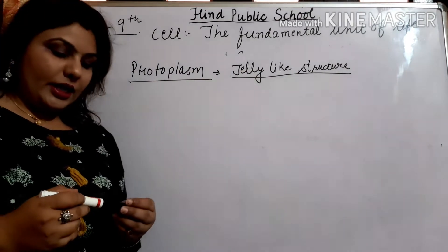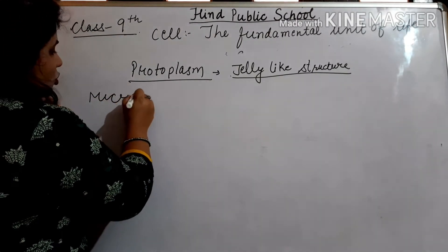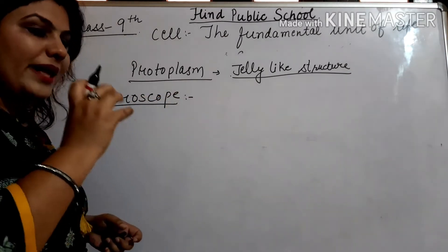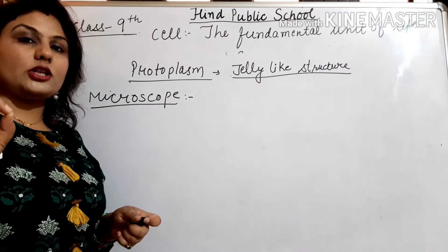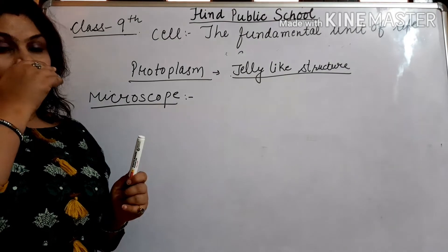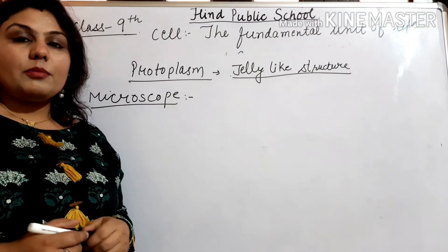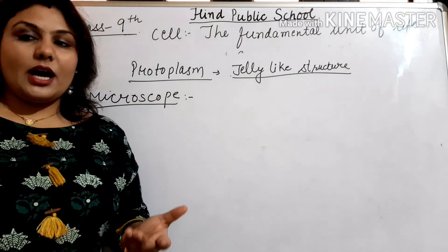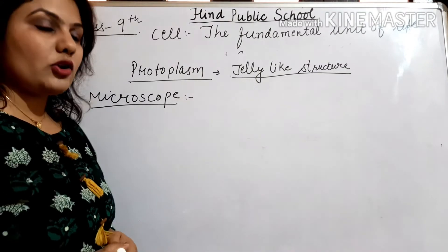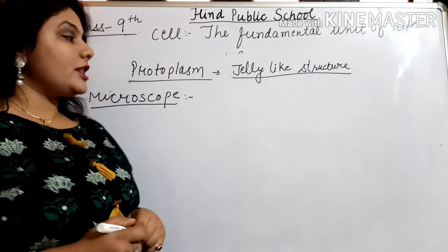In sab ko observe karne ke liye Leeuwenhoek ke paas tha microscope. Ab hum baat karte hain — microscope kya hota hai? Microscope ek tarah ka instrument hota hai jis mein hum micro particles ko bade size mein dekh sakte hain — jinko hum apni aankhon se directly nahi dekh sakte. Unko hum microscope ki madad se dekh sakte hain. Mein aap logon ko ek rough diagram ke through uski working sikha rahi hoon.